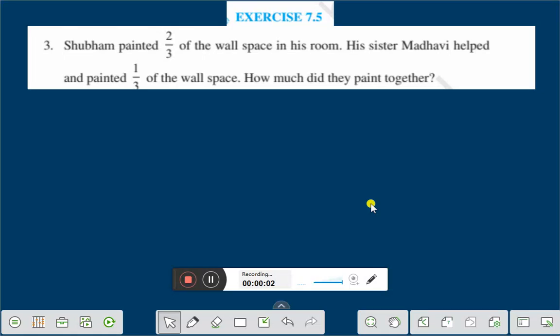Hello everyone. Today we shall discuss exercise 7.5 question number 3. Shubham painted 2/3 of the wall space in his room. His sister Madhavi helped and painted 1/3 of the wall space.